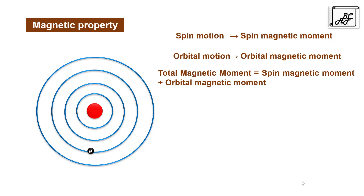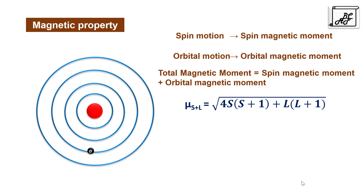The total formula for magnetic moment is given as μ(s+l) = √(4S(S+1) + L(L+1)), where S is the spin quantum number and L is the orbital quantum number.